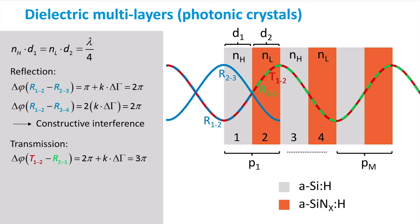Let's now consider the transmission at the interfaces. At the 2-3 interface, for instance, the red wave interferes with the twice-reflected green wave. The green wave undergoes two reflections with a phase shift, so the total phase shift between the two waves equals 2π plus the 1π phase shift caused by the optical path length difference. This amounts to a 3π phase shift.